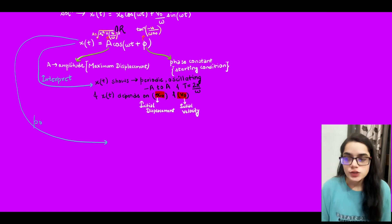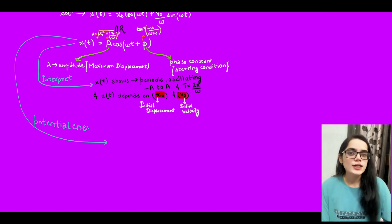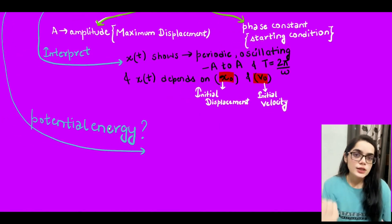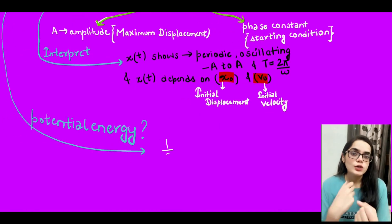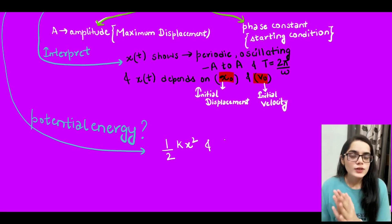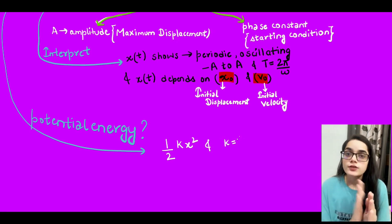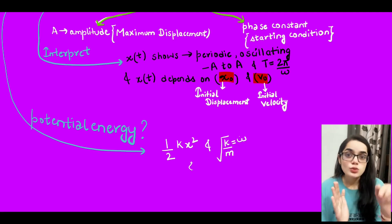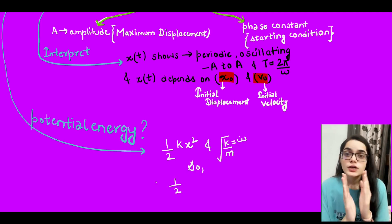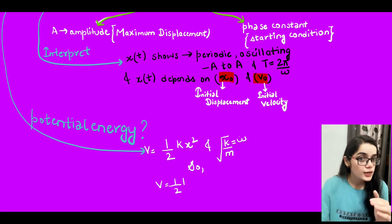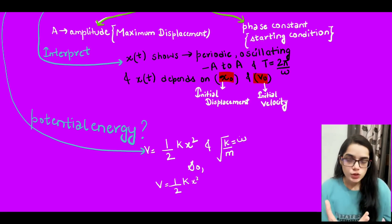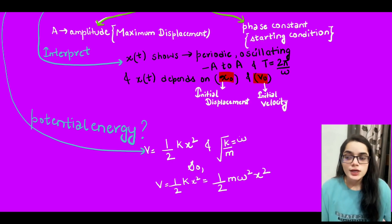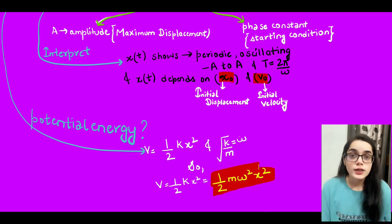Now, the potential energy of the system comes from the work done. After solving, we get potential energy equal to ½kx². We also know that ω = √(k/m), so we can write the potential energy as ½mω²x².